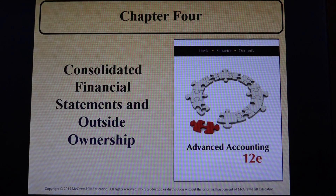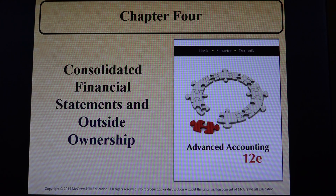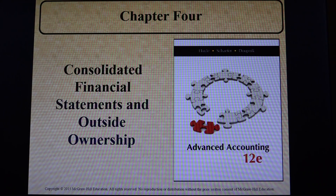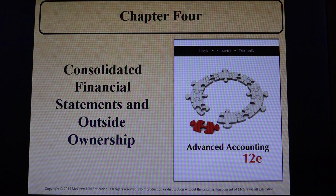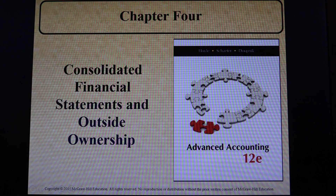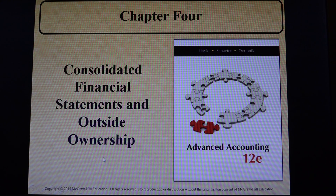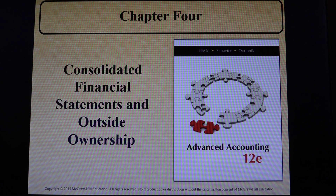In chapter four, we want to deal with some concepts in consolidating financial statements when you have a non-controlling or more than one non-controlling owner. This used to be called minority owners, but they changed it — it's now called non-controlling ownership. Any shareholders who own less than 50.1 percent are considered non-controlling owners.